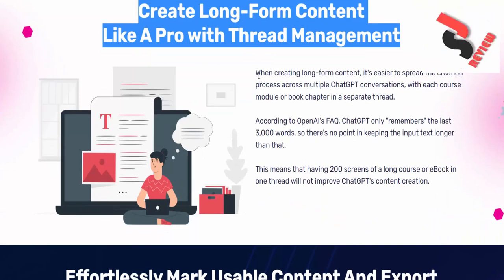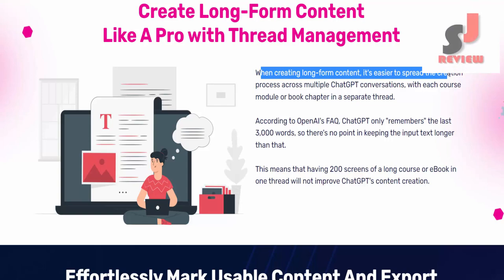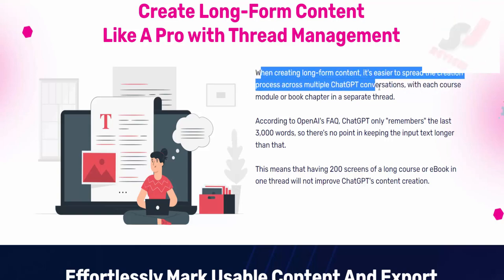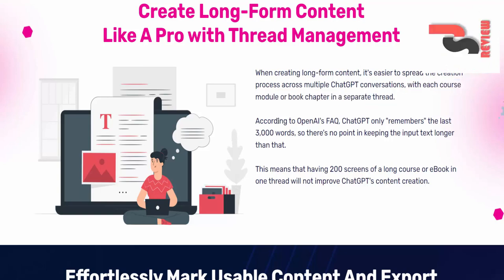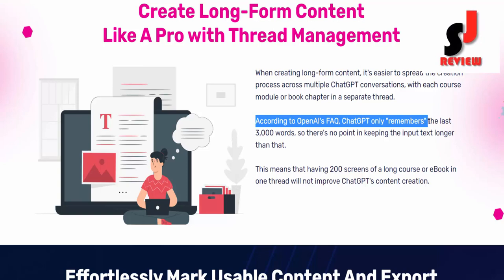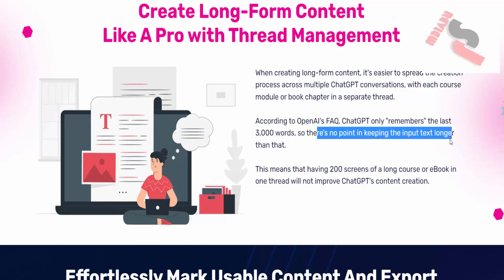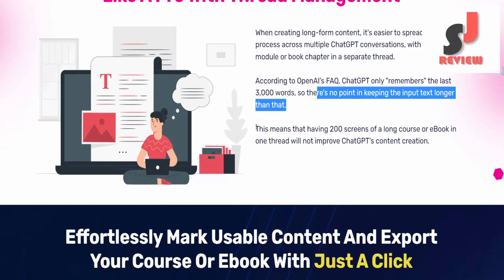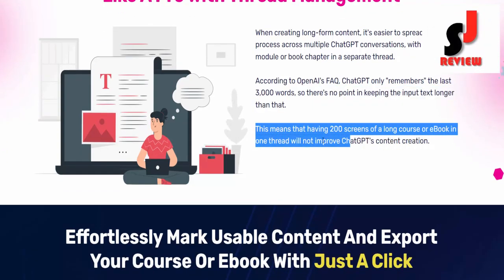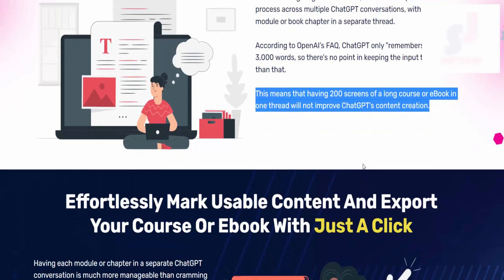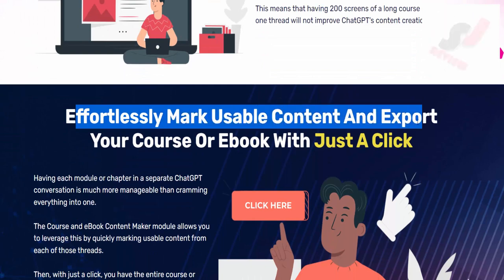When creating long-form content, it's easier to spread the creation process across multiple chat conversations, with each course module or book chapter in a separate thread. According to OpenAI's facts, chat only remembers the last 3,000 words, so there's no point in keeping the input text longer than that. This means that having 200 screens of a long course or book in one thread will not improve chat content creation.